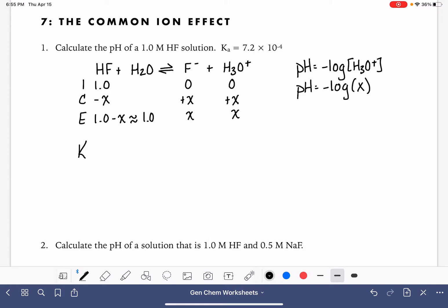To solve for X, we're going to write an equilibrium expression. That's going to be our products over reactant. Our products are both X, so that's X squared over our reactant, which is 1 molar. And our Ka value for this is 7.2 times 10 to the minus 4.